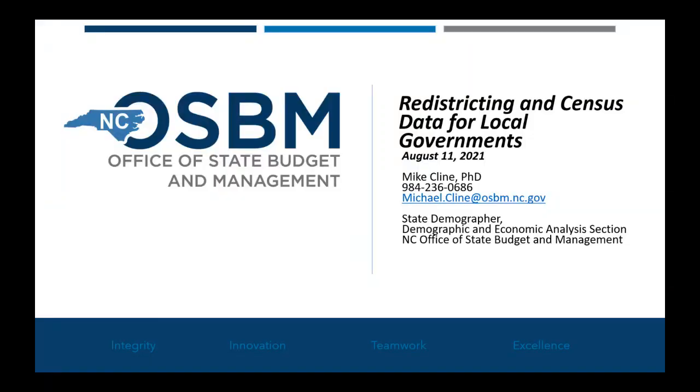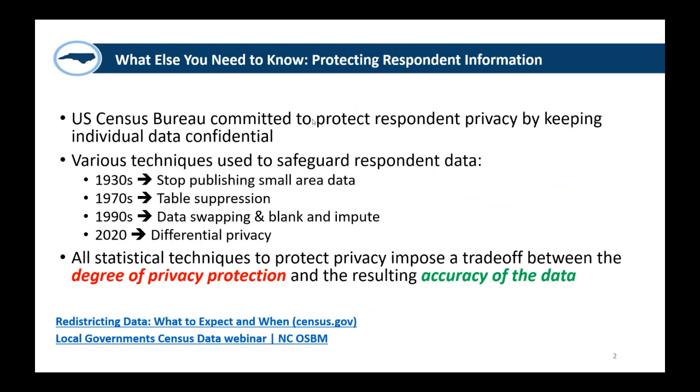Thanks Bob. I think Bob did an excellent overview of what you should expect coming out tomorrow and in the next few weeks. I just want to highlight a few things Bob touched on. One of the key issues is differential privacy with the disclosure avoidance system, because this is a new way of keeping the data confidential and making sure individual information is not released. If you want more technical information, go back to our webinar from June.